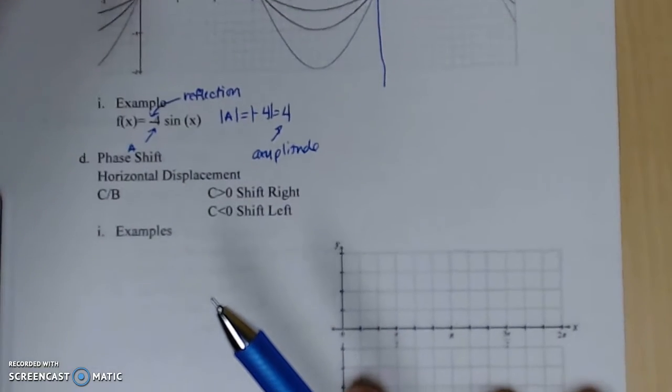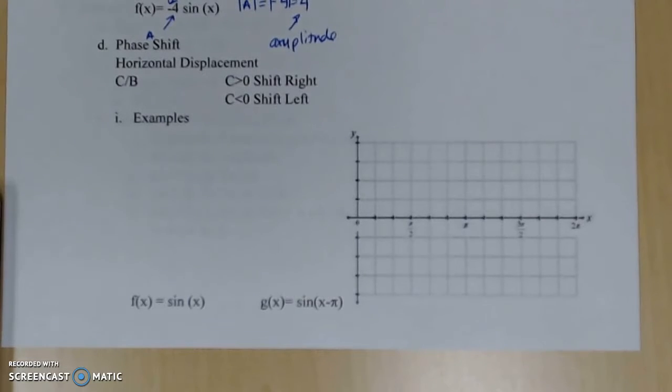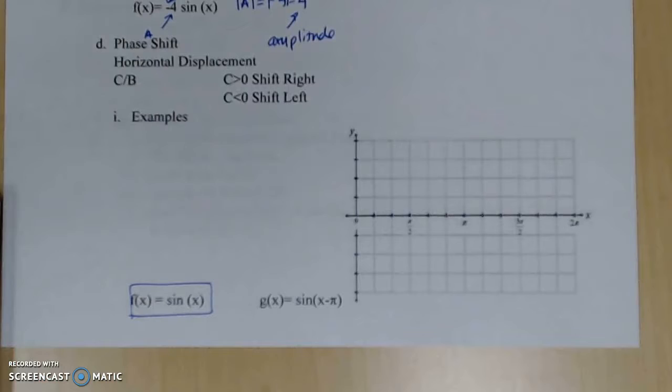What I want to do is look at two examples of sine and show you how this exists. You can see that first of all my F function is just sine X. That's our basic sine graph. We already know what it looks like.